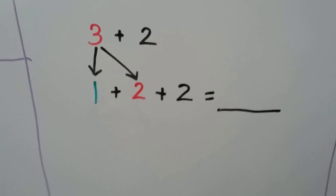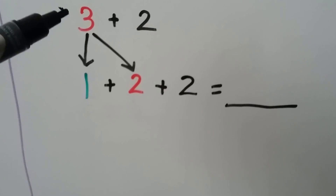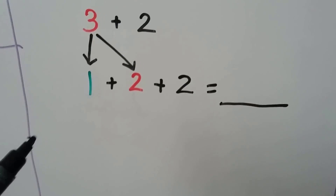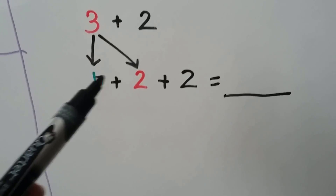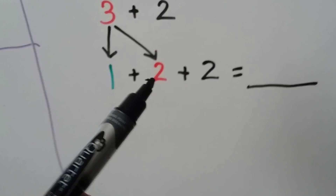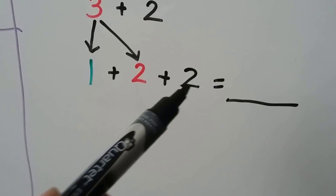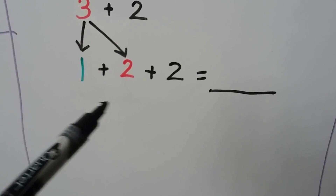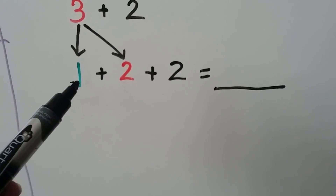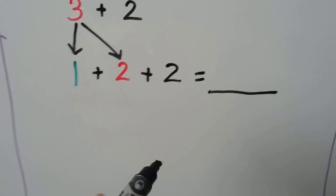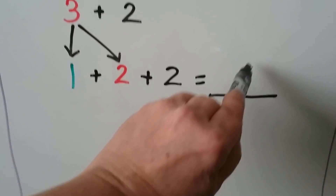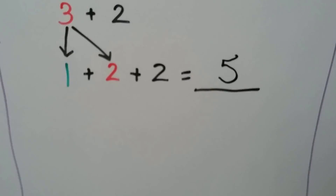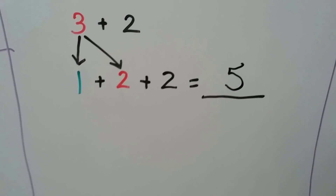3 plus 2: we can start with the 3 and count on 2. Or we could break the 3 into a 1 and a 2. Now we have doubles — 2 plus 2. And if we know 2 plus 2 is equal to 4, we can add the extra 1 left over and we'll get 5. Which means 3 plus 2 is equal to 5.